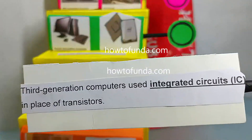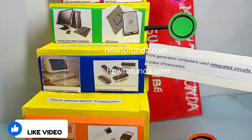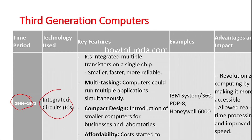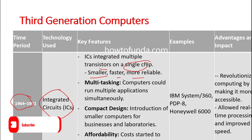The third generation computer period was 1964 to 1971. Here, instead of transistors, they started using integrated circuits. Integrated circuits are very small and contain multiple transistors in a single chip, making them faster and more reliable. They introduced the feature of multitasking — the computer could run multiple applications simultaneously — and had a very compact, small design.